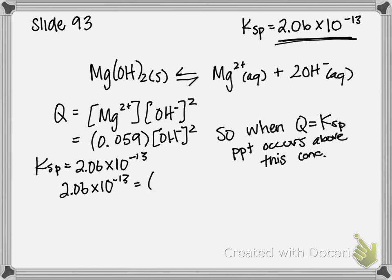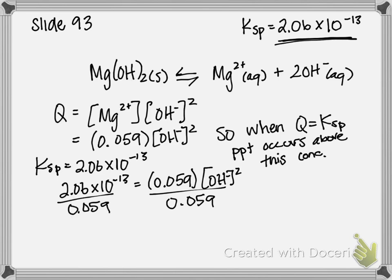And I'm going to set that equal to 0.059 times hydroxide squared, and get that hydroxide by itself. And then I'm also going to square root both sides. And when I do that, I get that my hydroxide concentration is equal to 1.9 times 10 to the negative 6 molar.